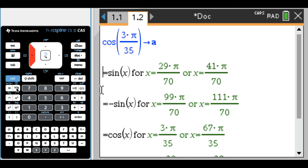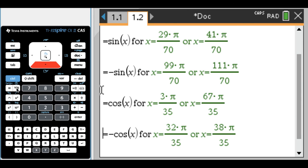So the cosine of 3 pi over 5 - can't even read that. The cosine of 3 pi over 5 is equal to the sine of 29 pi over 70 and the sine of 41 pi over 70. It's equal to the negative of the sine of 99 pi over 70, and so on. And you can just scroll through.